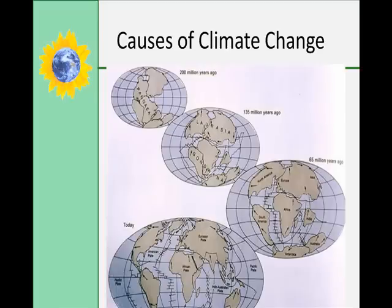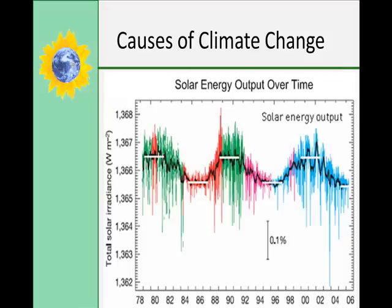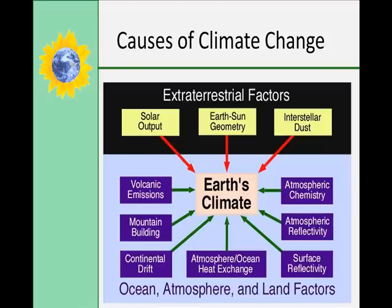Some causes of climate change include continental drift — the continents have moved over millions of years, and these movements have resulted in climate change. Solar energy is another cause; the sun's solar output fluctuates slightly from year to year, usually on 11-year cycles, and increased sunspot activity is associated with an increase in solar output. Volcanic activity can also affect climate change because gases and dust block out incoming solar radiation, causing lower temperatures.